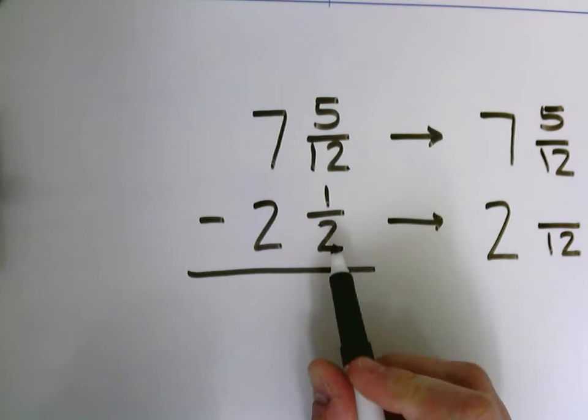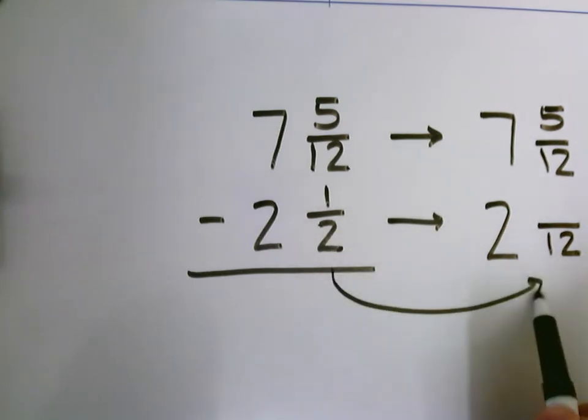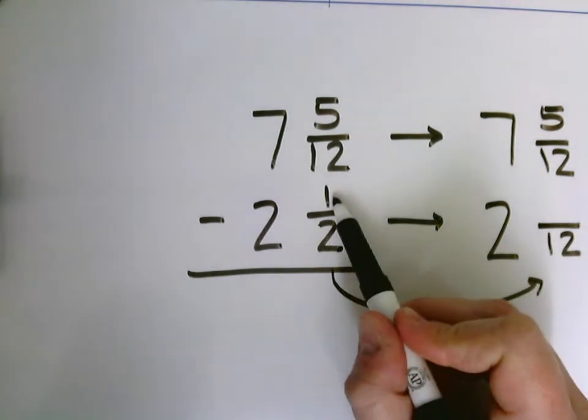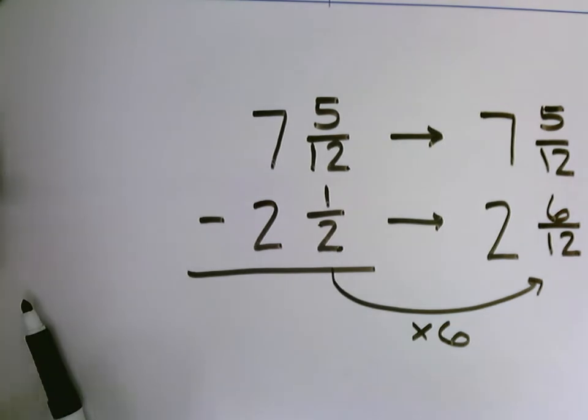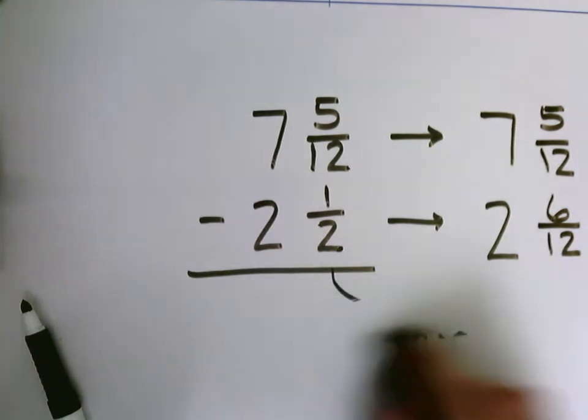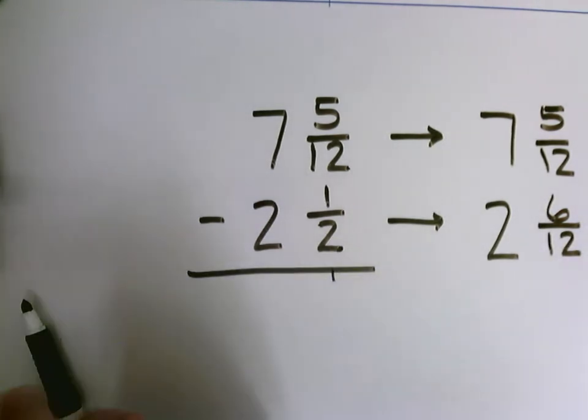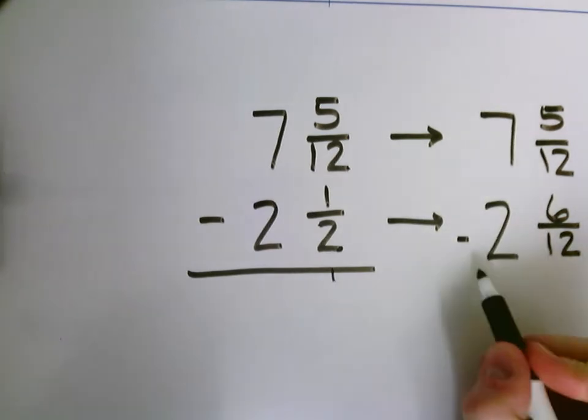And we're going to change our 2 and 1 half to have a denominator of 12. So I'm going to think, well, 2 times 6 equals 12. So I'm going to do 1 times 6, which is going to give me 6. So my new problem is 7 and 5 twelfths minus 2 and 6 twelfths.